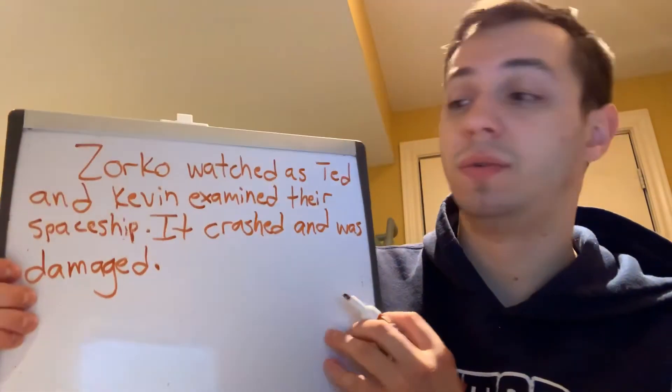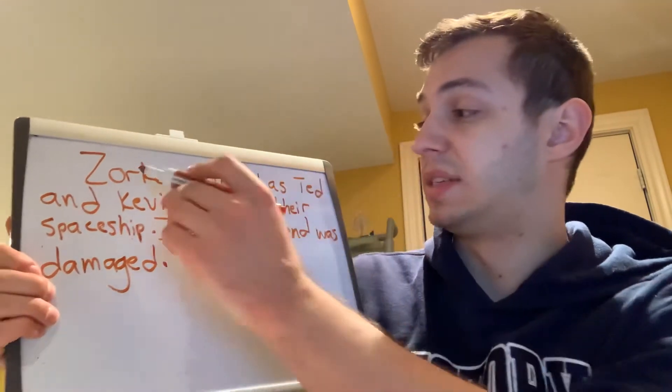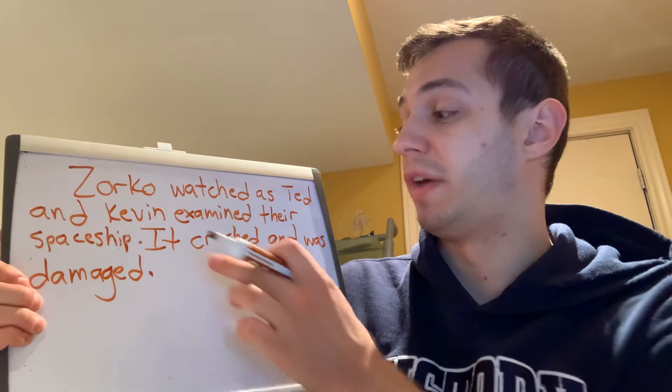Now we have three separate people speaking, and I still haven't had anybody say anything yet. My first person that speaks will just continue with this first paragraph. I'm going to start with what Kevin said. So I'm going to write: Kevin said, then put my comma, quotation marks, and begin with a capital T.